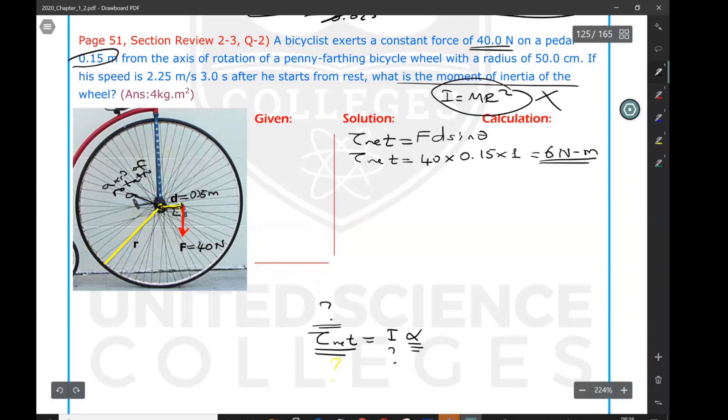This force produces a torque of 6 N·m on the bicycle tire. Now I've got the first thing I need. Second thing I have to calculate is the angular acceleration. If I look at the question, it's talking about starting from rest, which means both initial angular speed and initial linear speeds are zero. Not moving, not rotating. But after 3 seconds, this bicycle attains a speed of 2.25 m/s.